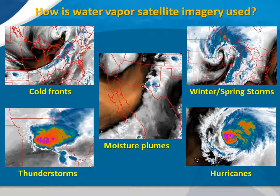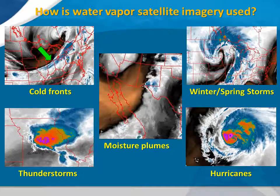Here are a few examples of phenomena that water vapor imagery can help us see. Strong cold fronts can be easily distinguished by a fairly abrupt transition from a lot of water vapor to very little at all, as we see in the top left image.